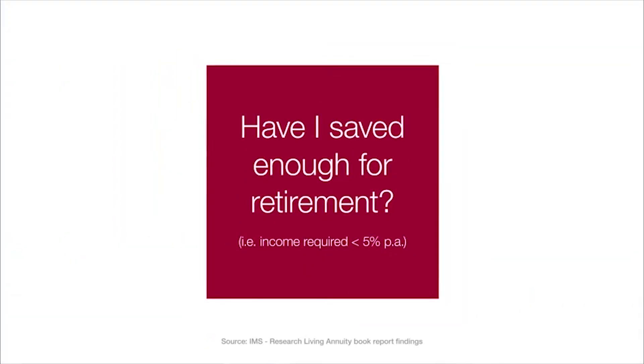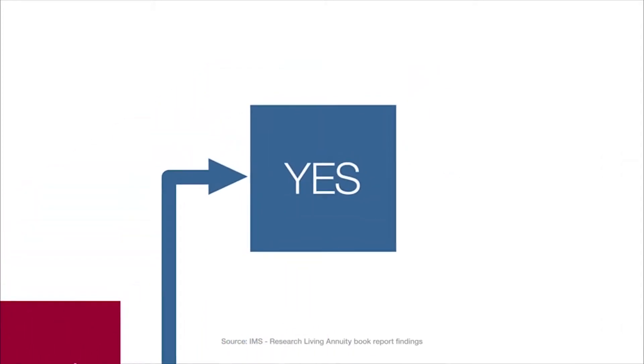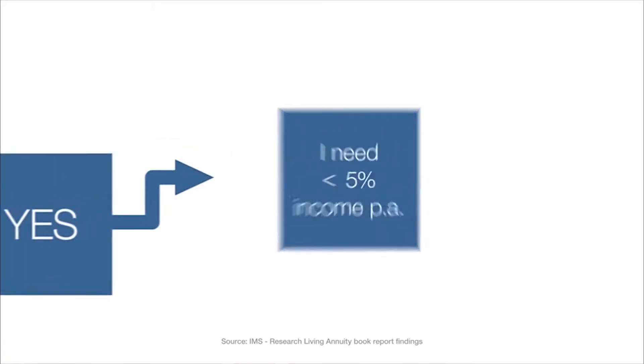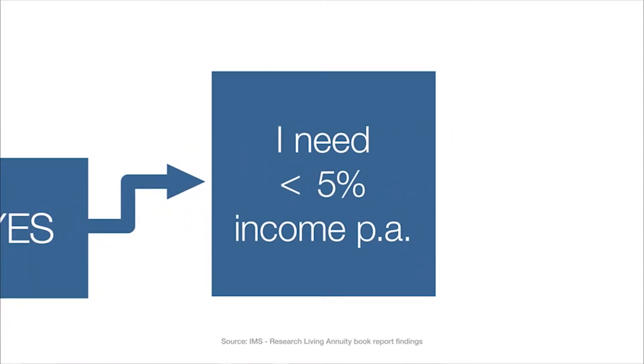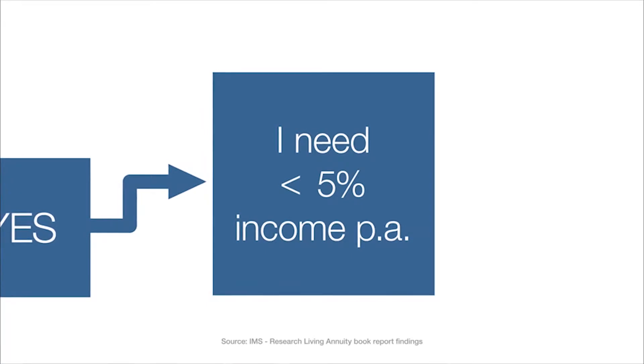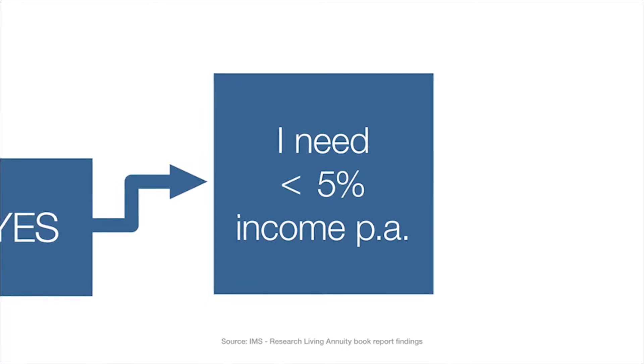When an advisor asks a client how much income they need and how much assets they have accumulated, they do a simple sum — income divided by assets — and get a percentage. Based on that percentage, you can quickly figure out what situation the pensioner is in. If the percentage is less than five — meaning the client needs less than 5% of their portfolio value as income — that pensioner is generally fine, has probably saved enough, and will have a fairly comfortable retirement. It will take a substantial market shock to negatively affect such a retirement.